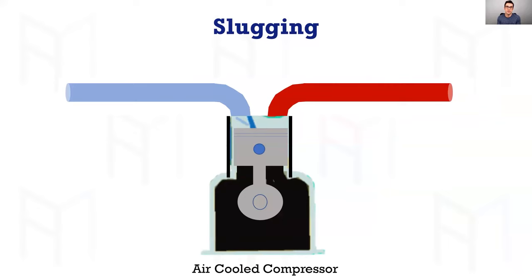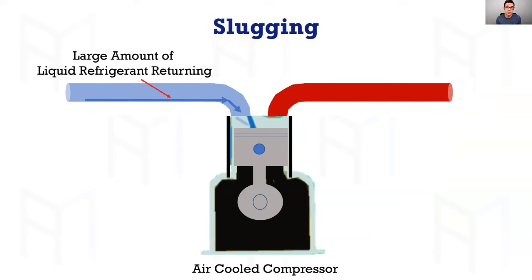Next, air-cooled compressors. You can tell an air-cooled compressor — for example a Copeland K-body — by looking at the head where you'll have your discharge and suction right on the head. When an air-cooled compressor takes a slug, it happens differently than a scroll. You have a large amount of liquid refrigerant returning, and this happens through flood back — you lose control of the evaporator. The fans aren't running, it ices up, you have a dirty coil — all those things can lead to a large amount of liquid refrigerant coming back because you cannot boil off that liquid refrigerant.